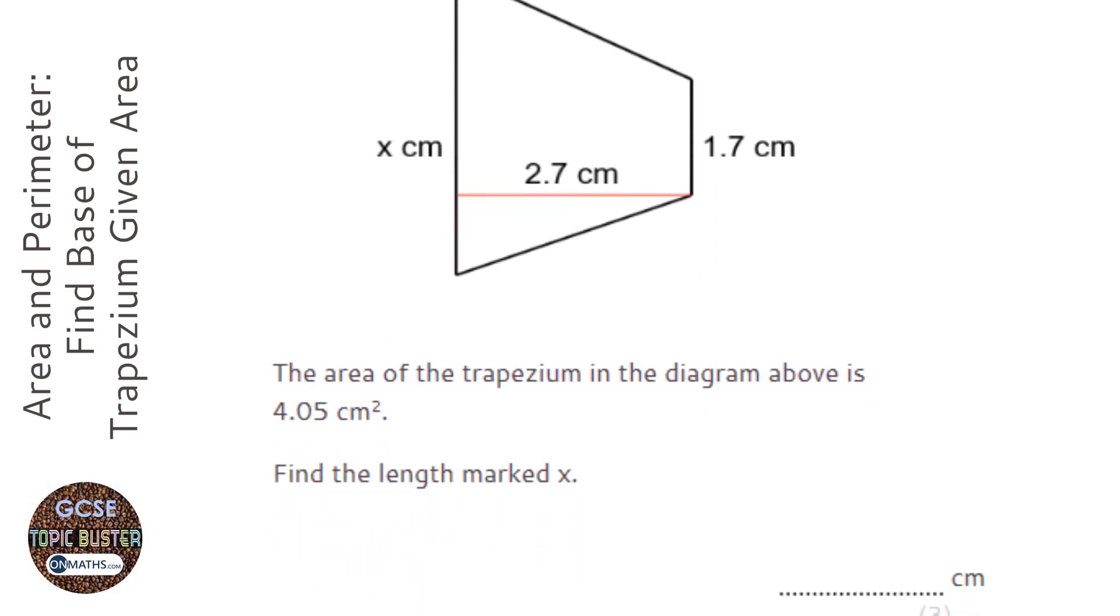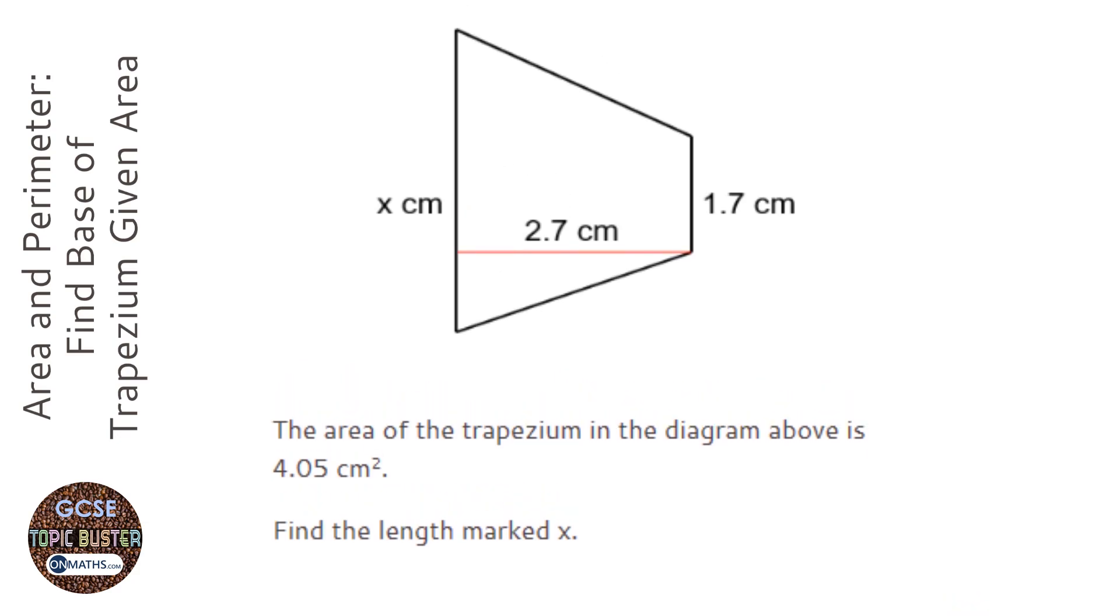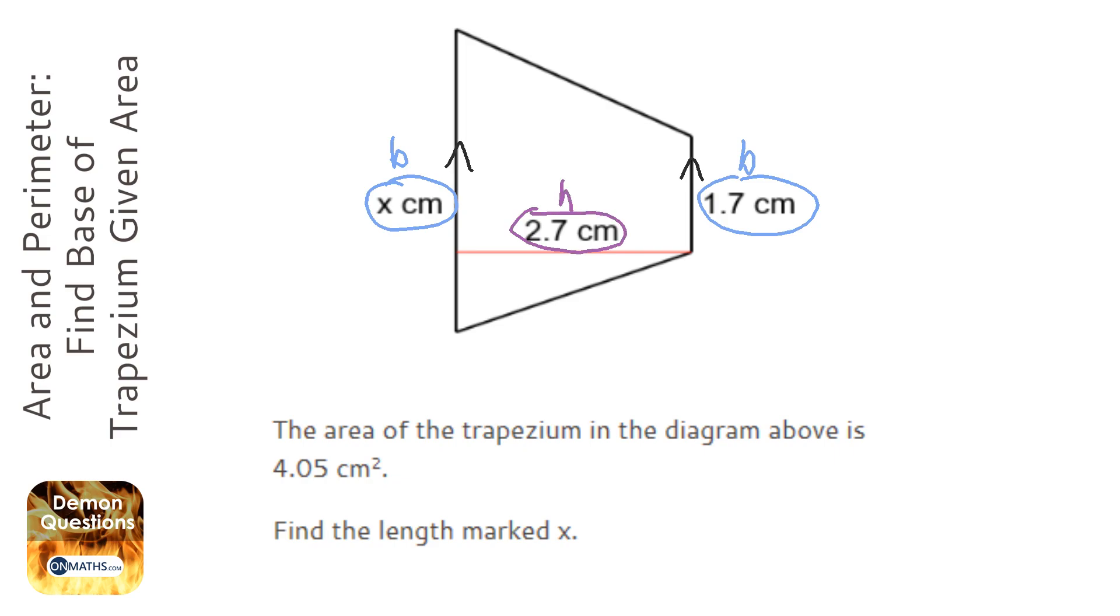We're asked to find the length marked x in this trapezium. A trapezium has one pair of parallel sides. To work out the area, we add together both bases, which are the two parallel sides, halve it, and then times by the height. The height connects both bases at right angles.